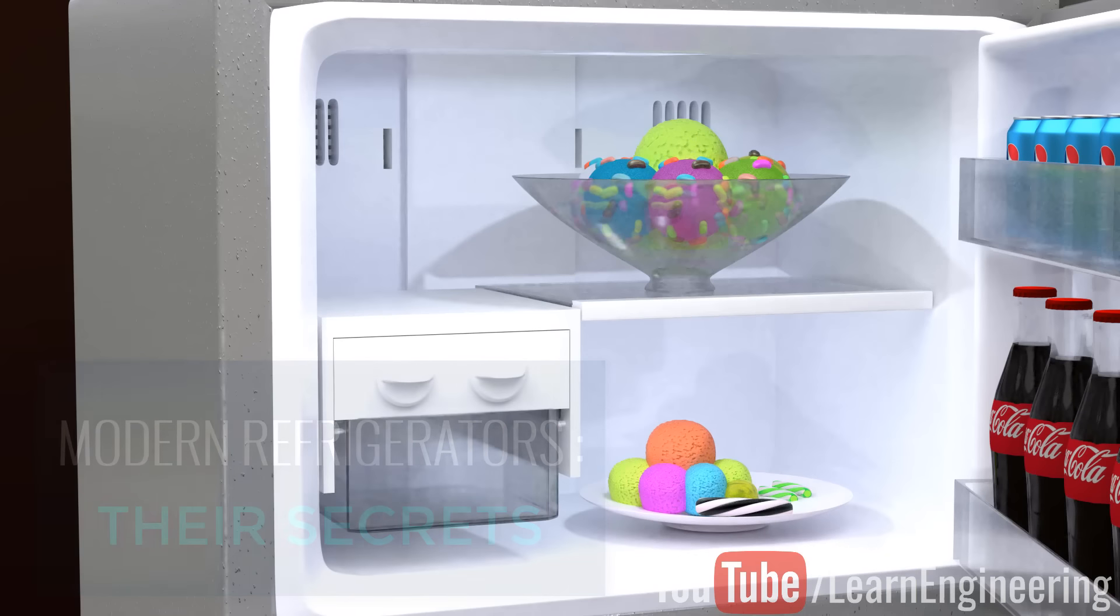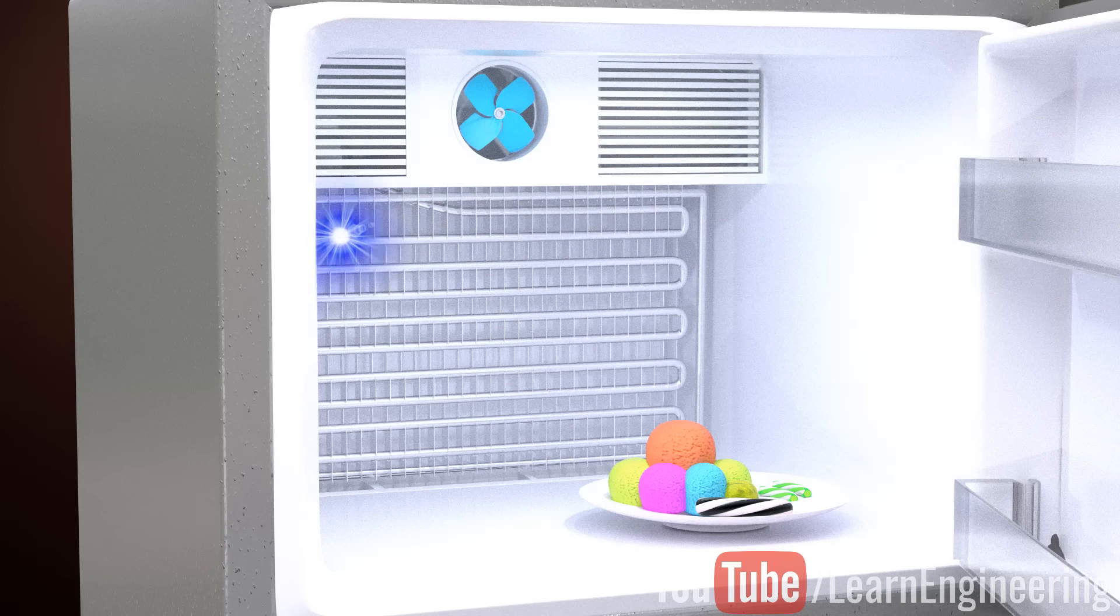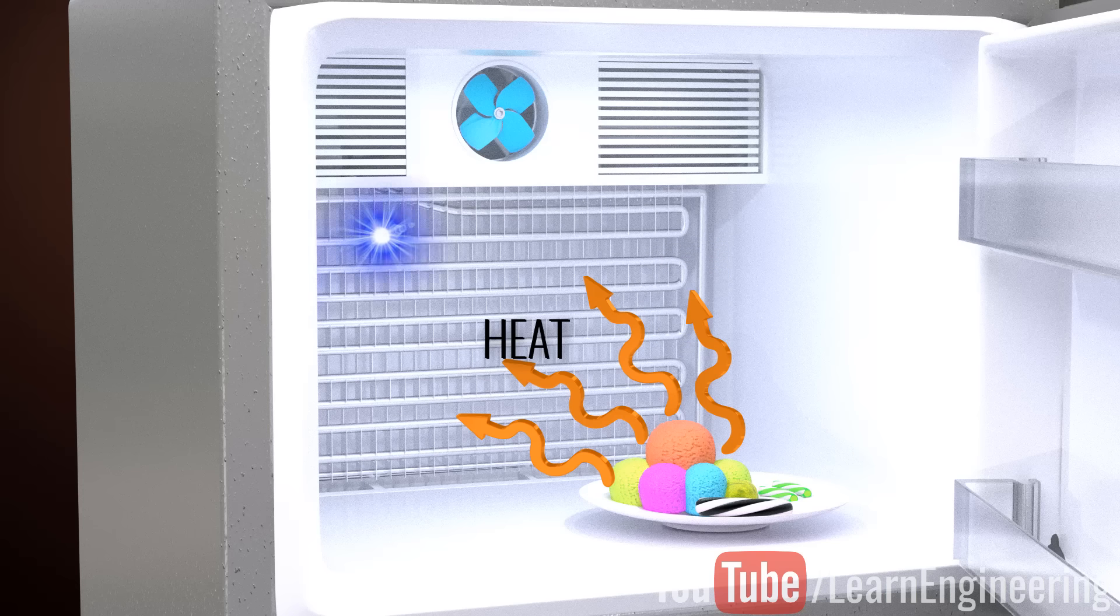The basic principle of refrigerators is simple. Simply pass a colder liquid continuously around the object to be cooled. Let's see how this continuous cold liquid flow is achieved inside a refrigerator.